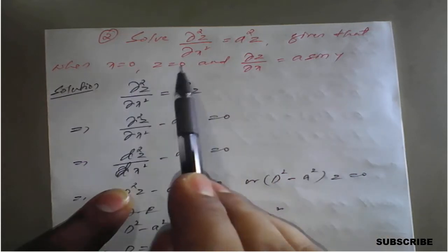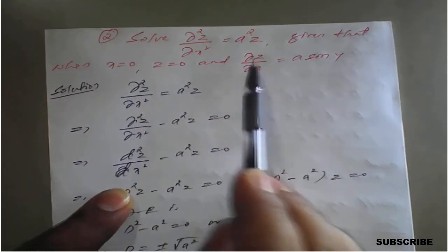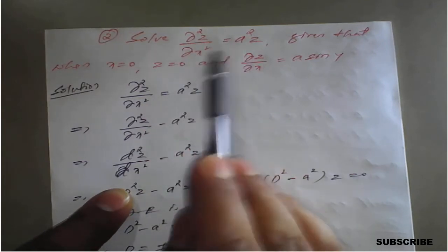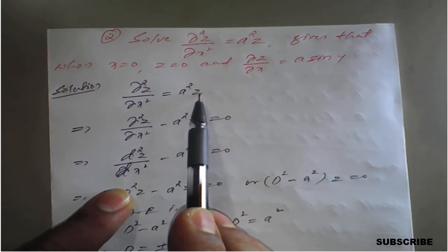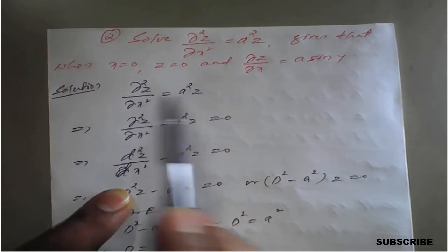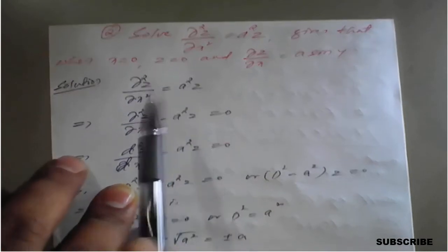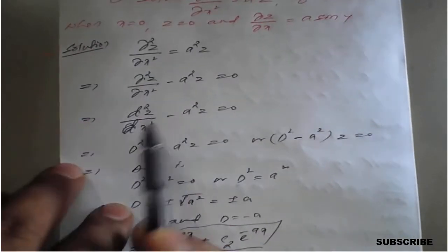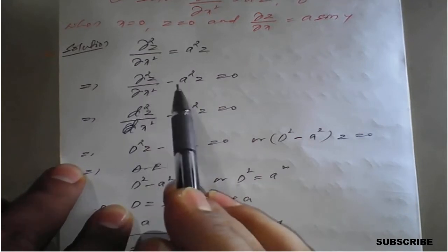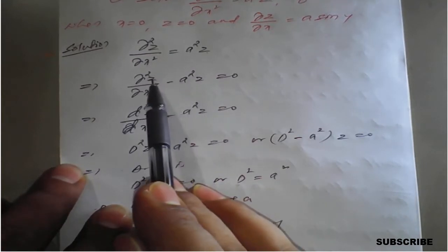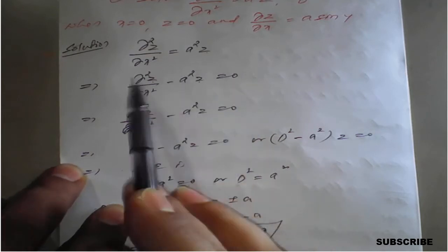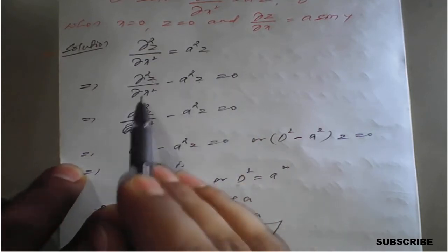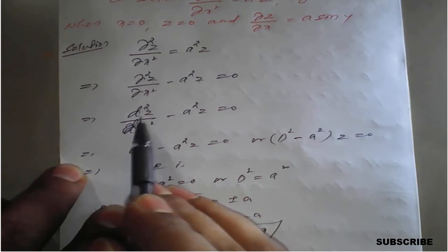When x is 0, z becomes 0 — that is the second condition applied. The given partial differential equation is homogeneous because the function z appears in both terms with the same variable and there are no x or y terms separately, which is why it is homogeneous.